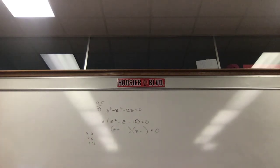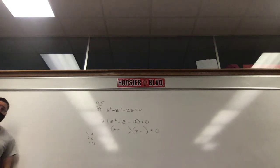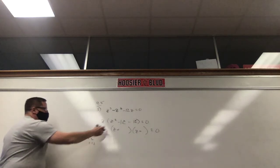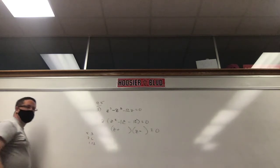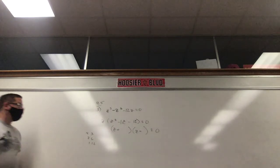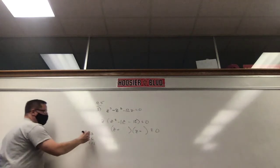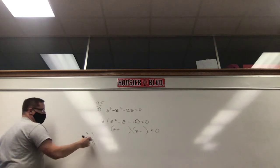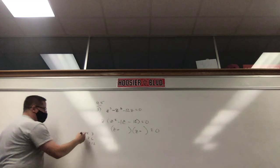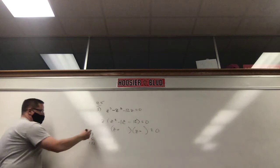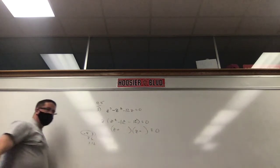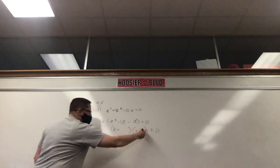If you know your times tables, factoring is easier. If you struggle with your times tables, factoring is even harder. Which of these adds up to 1? None of them do — 4 and 3 add up to 7, 2 and 6 add up to 8, 1 and 12 add up to 13. But one of them is negative, so negative 4 and positive 3 add up to negative 1, and that's what we want. Don't forget that z — so we get z(z − 4)(z + 3).